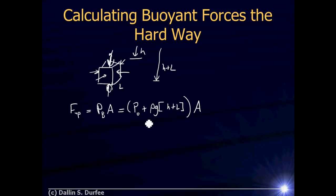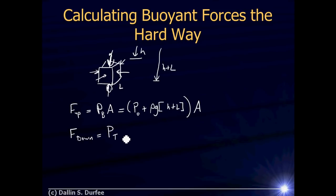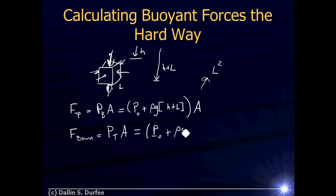That's the upward force due to the water pressure pushing up on the bottom of the cube. The pressure from the water pushing down from the top: its magnitude is going to be the pressure at the top times that same area — which is L² because it's a cube. The pressure at the top is atmospheric pressure plus rho times g times h, where h is the depth of the top.